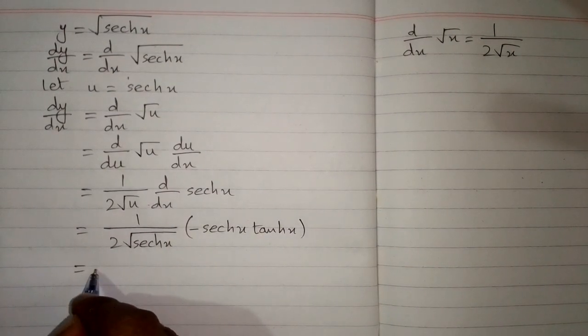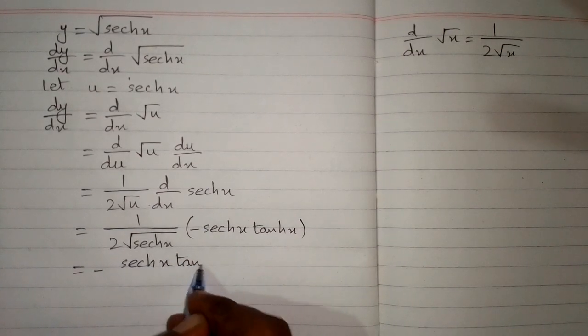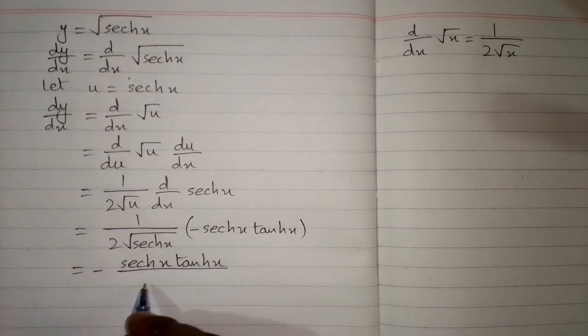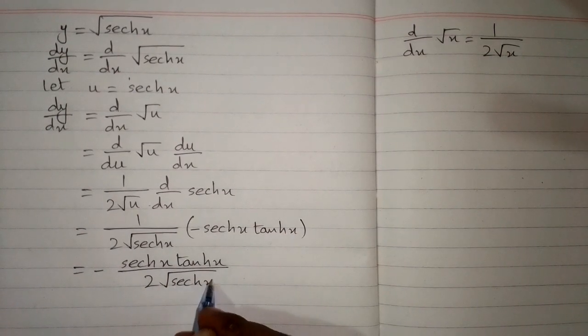So the answer is minus hyperbolic secant x upon 2 square root of hyperbolic secant x.